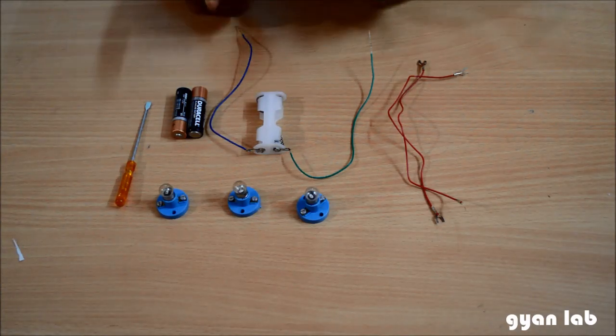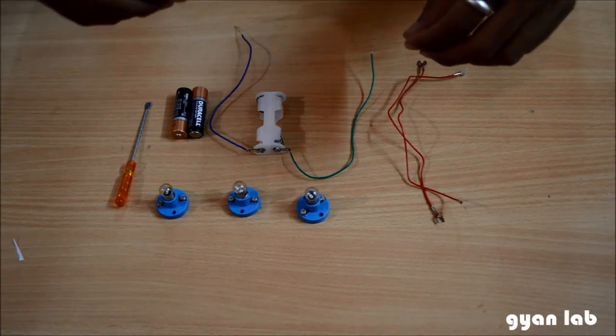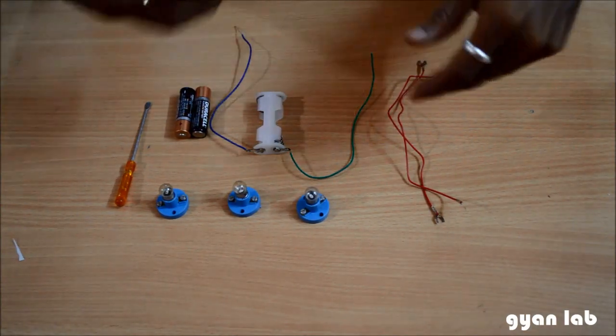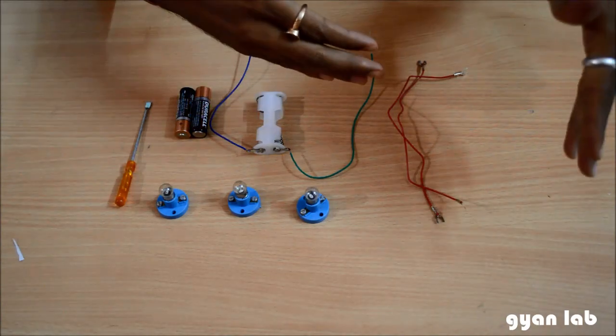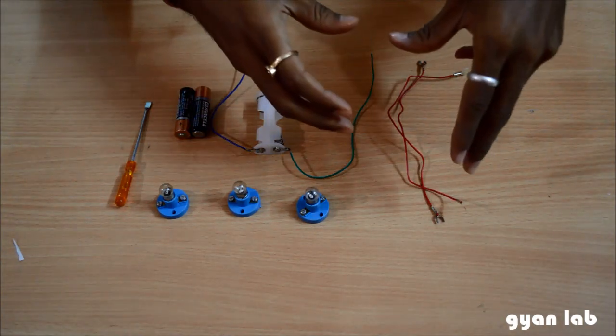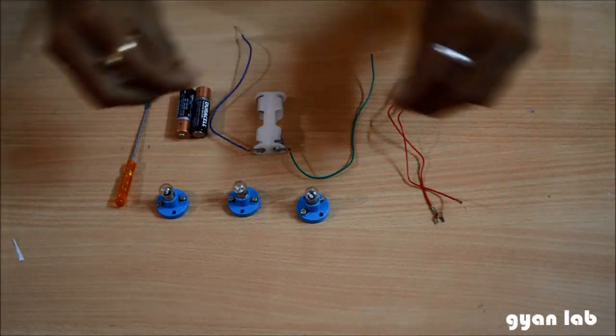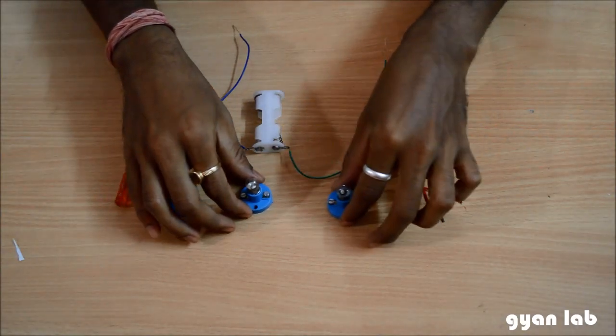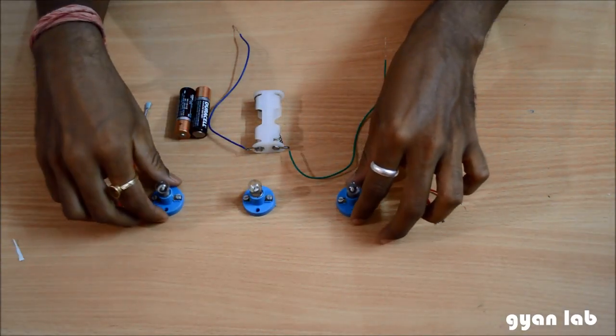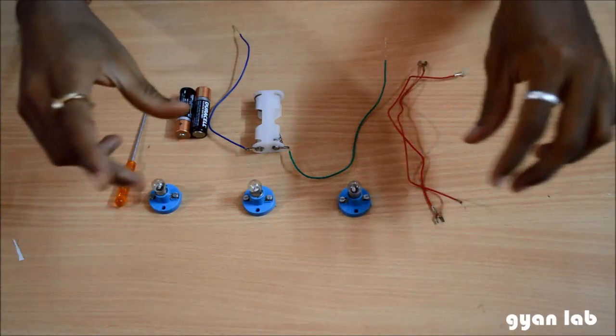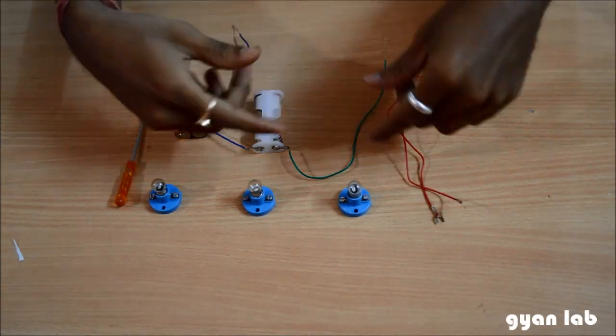To start off with you must always remember that a series circuit literally means a series. So we are going to have one component placed right next to each other in a particular line. If I place my bulb holders in this particular pattern it's going to make it much easier for us to understand.